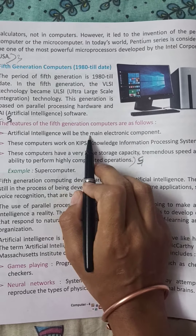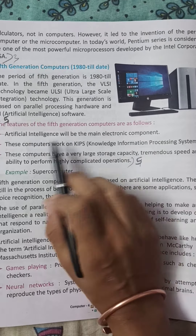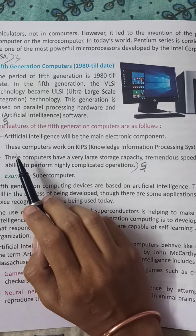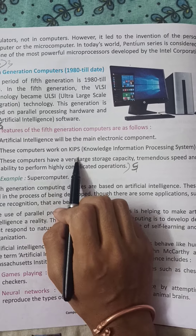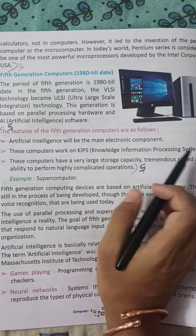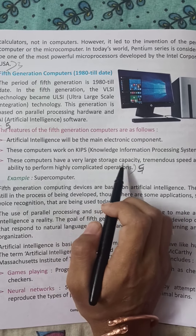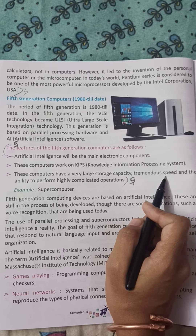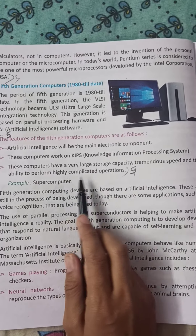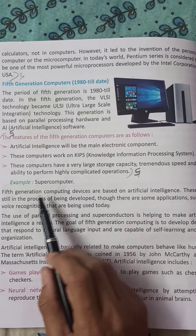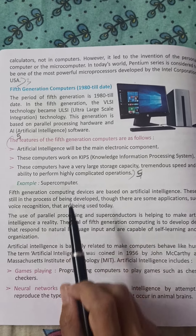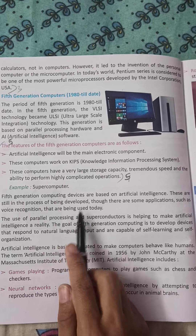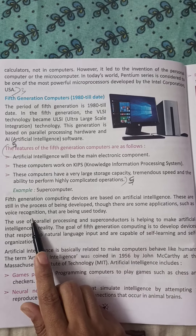In 5th generation computers, artificial intelligence became the main electronic component. These computers work on KIPS — Knowledge Information Processing Systems. They have very large storage capacity, tremendous speed, and can perform highly complicated operations. An example is the supercomputer.